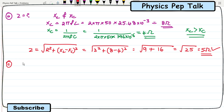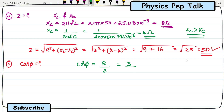For part C, power factor cos phi: cos phi is nothing but R by Z. The value of R is 3 ohms and Z is 5 ohms, so cos phi is 3 by 5, which is 0.6. This is the required solution for part C.